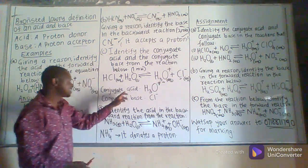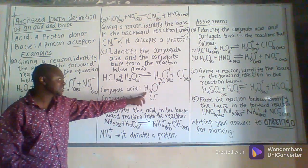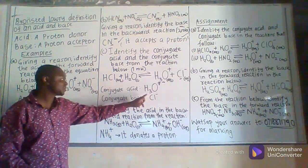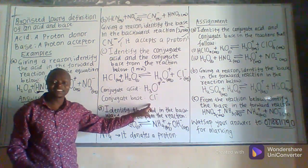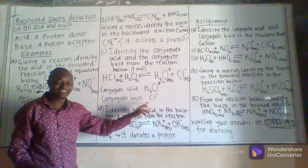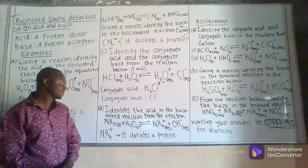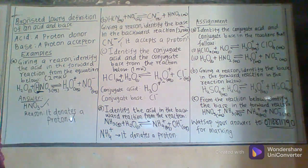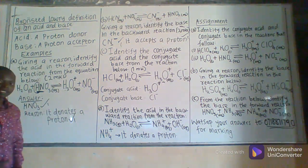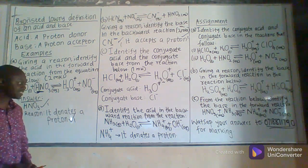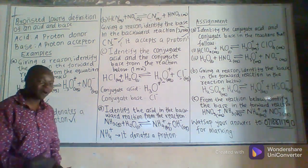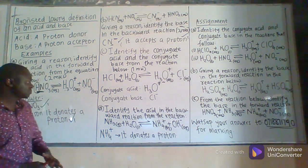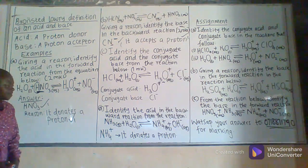So the conjugate acid in this case will be H3O positive and the conjugate base will be Cl negative. To enhance further understanding of the Bronsted-Lowry concept, I will give you the last example.